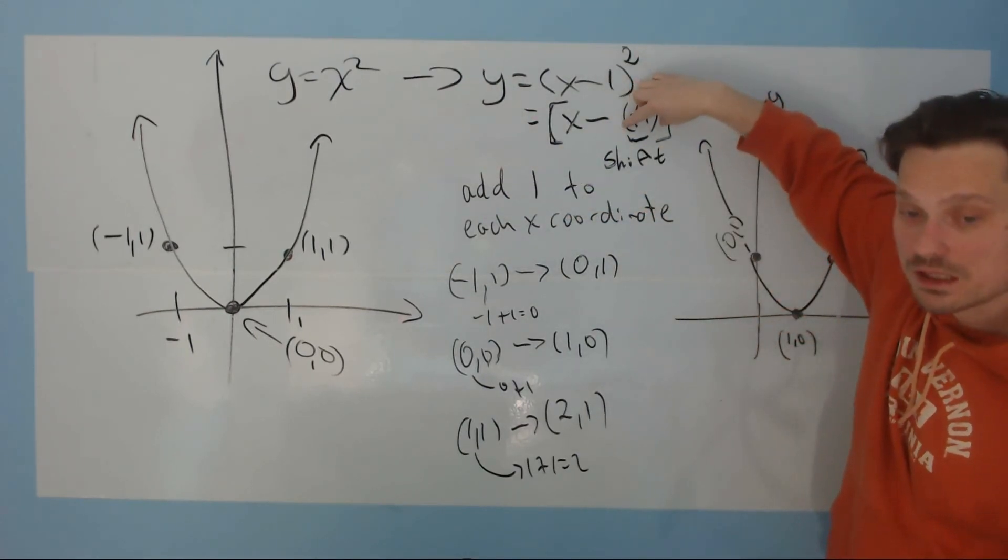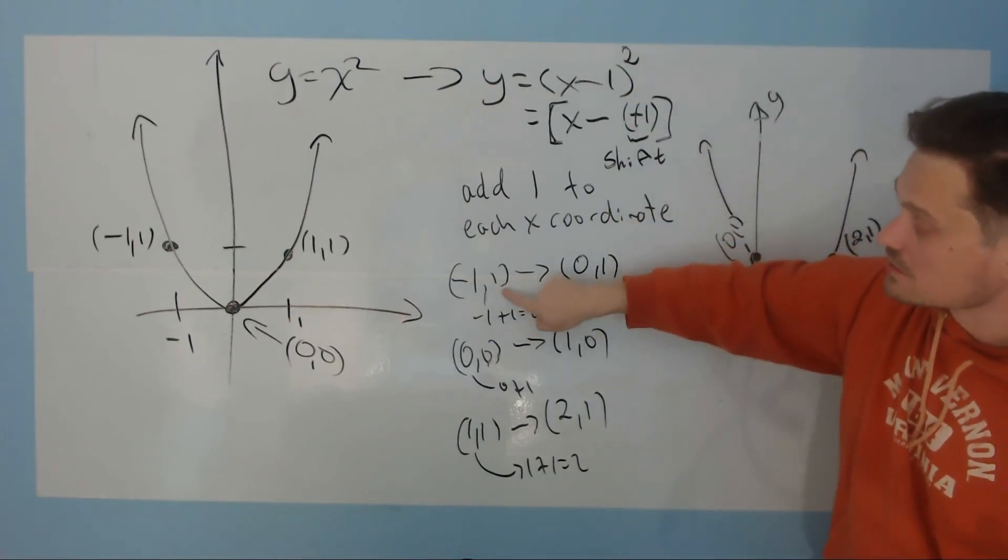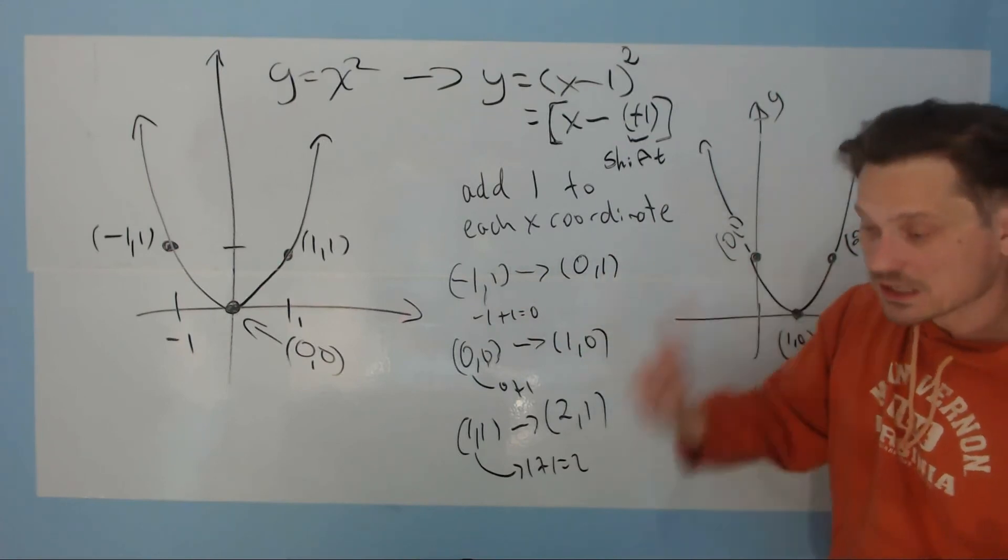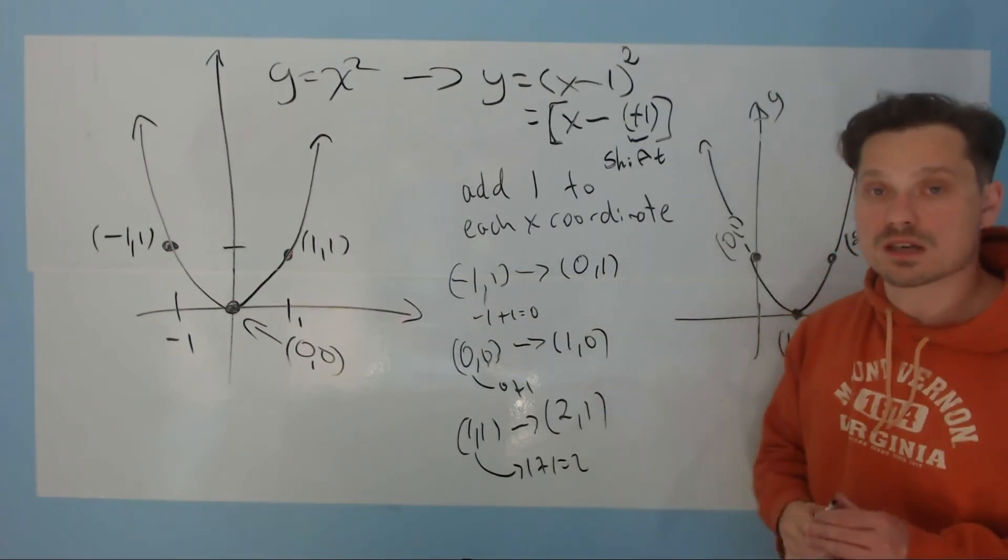this transformation right here is how you identify this as positive 1. And then notice when you transform the points, only the x-coordinate is changed during this process. The y-coordinate you don't change during this process. Keep that in mind.